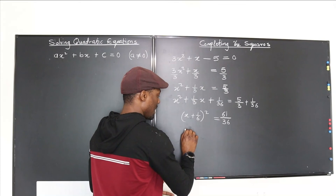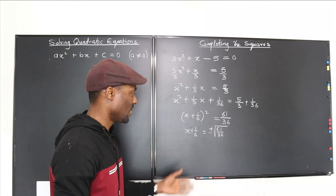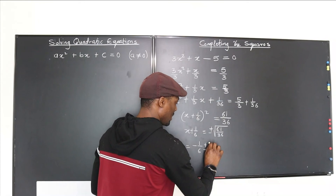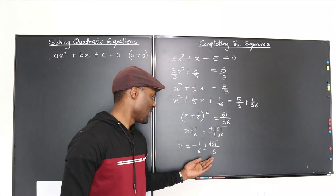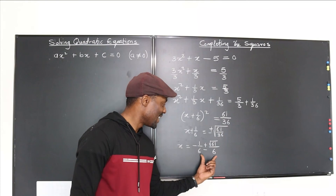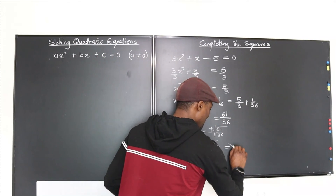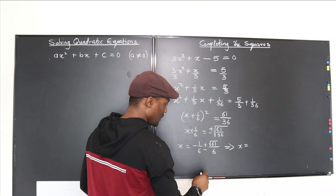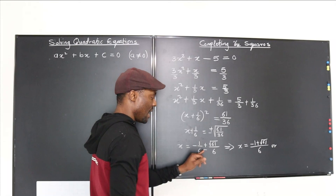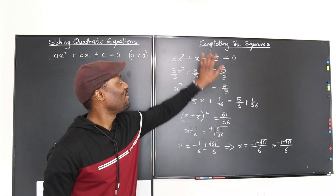Take the square root of both sides: x plus 1 over 6 equals plus or minus the square root of 61 over 36. Since the square root of 36 is 6, this becomes plus or minus square root of 61 over 6. Moving 1 over 6 over: x equals negative 1 over 6 plus or minus square root of 61 over 6. The denominators are the same, so the two answers are negative 1 plus square root of 61 over 6, or negative 1 minus square root of 61 over 6.